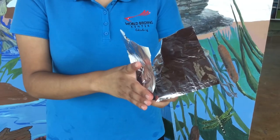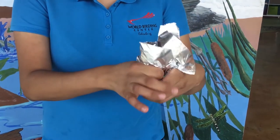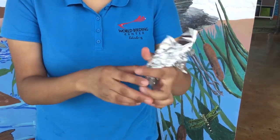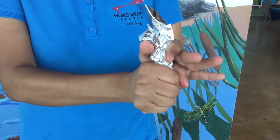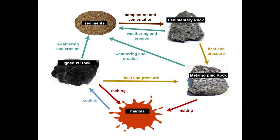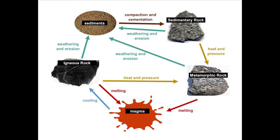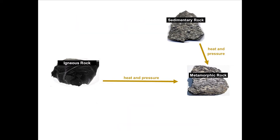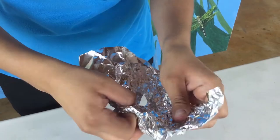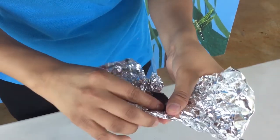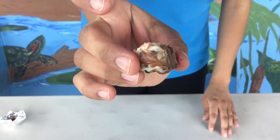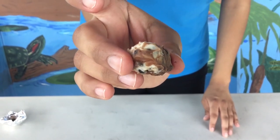And we are going to close the foil again and add more pressure. We are adding heat and pressure to create our metamorphic rock. Metamorphic rocks form through heat and pressure.